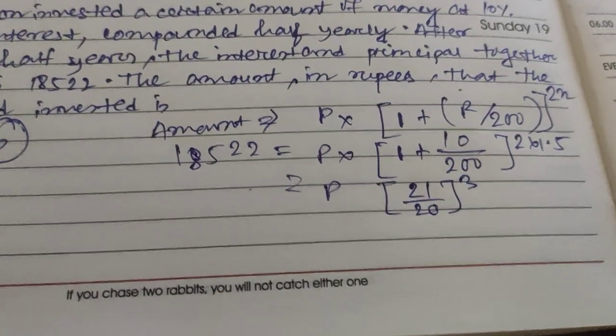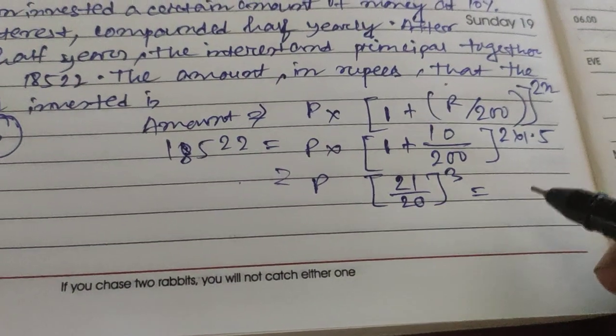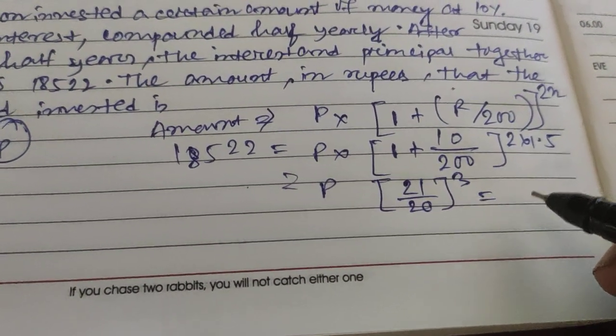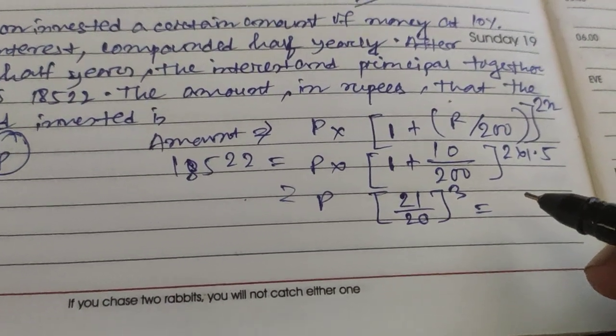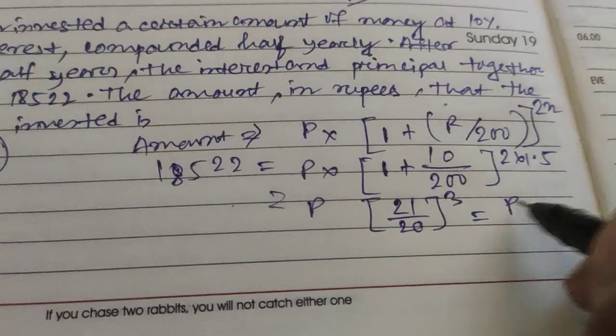21 squared is 441, and multiplying with 21 again gives us P into 9,261